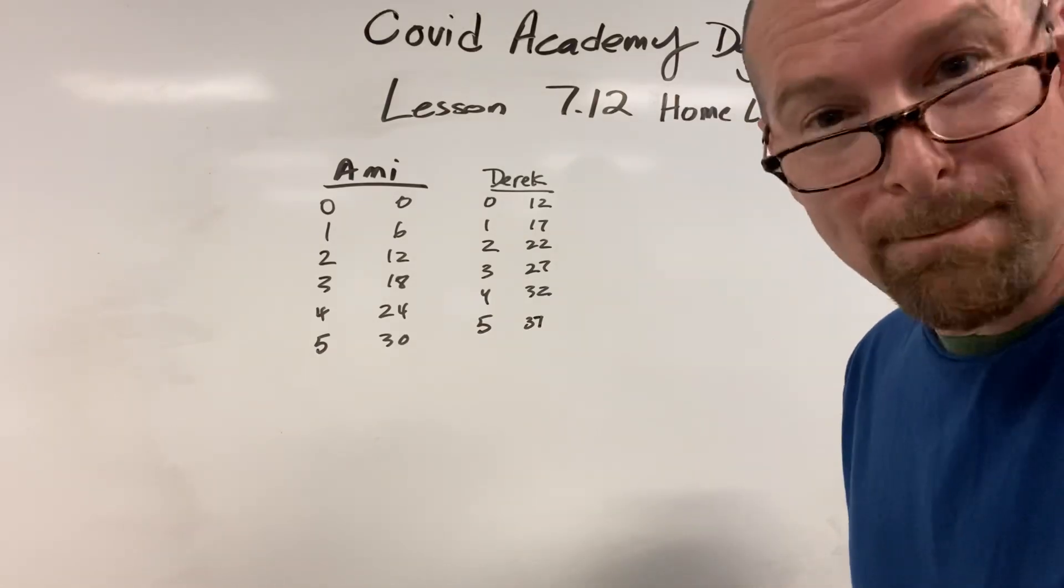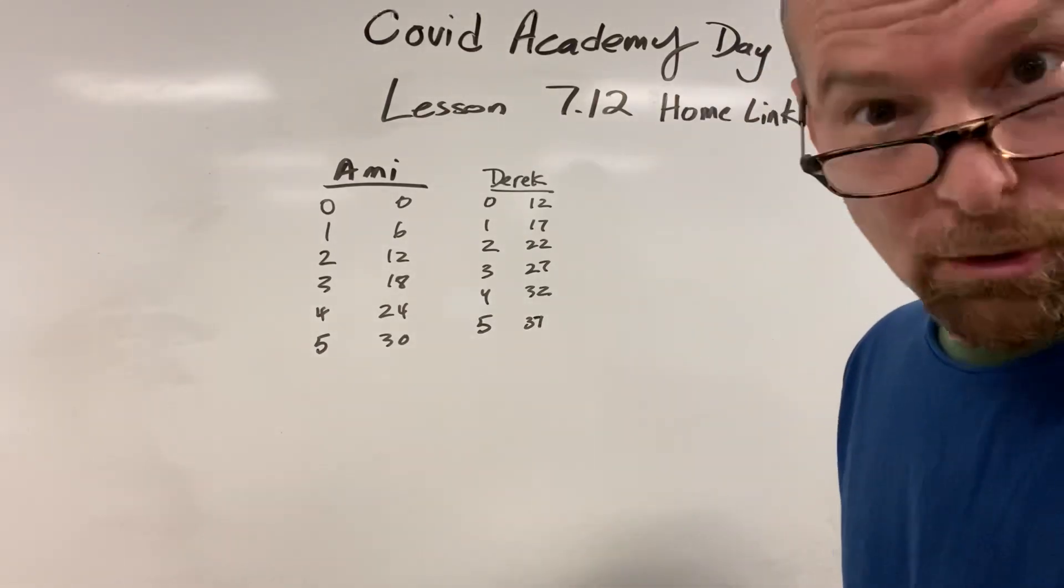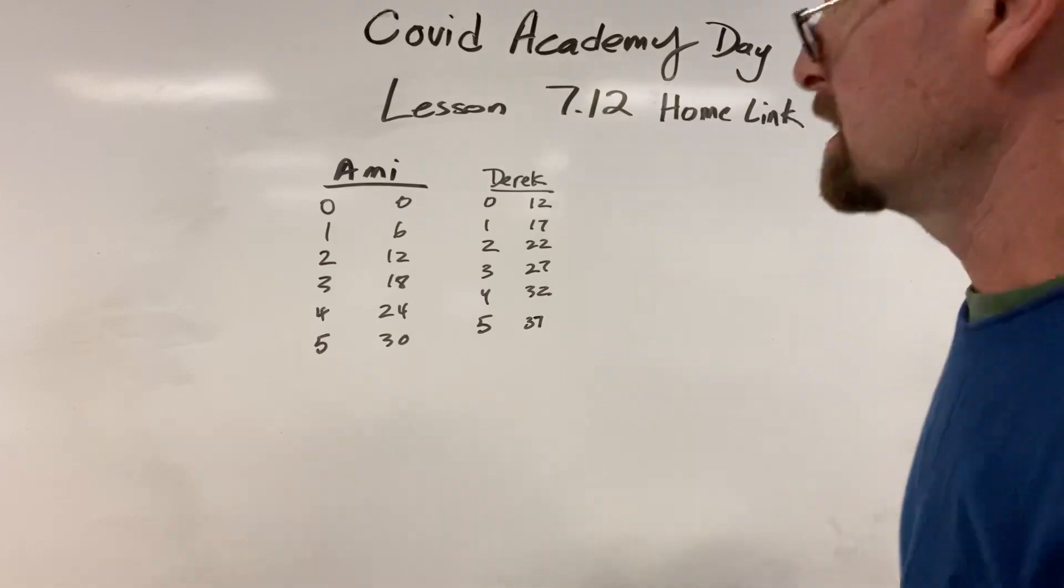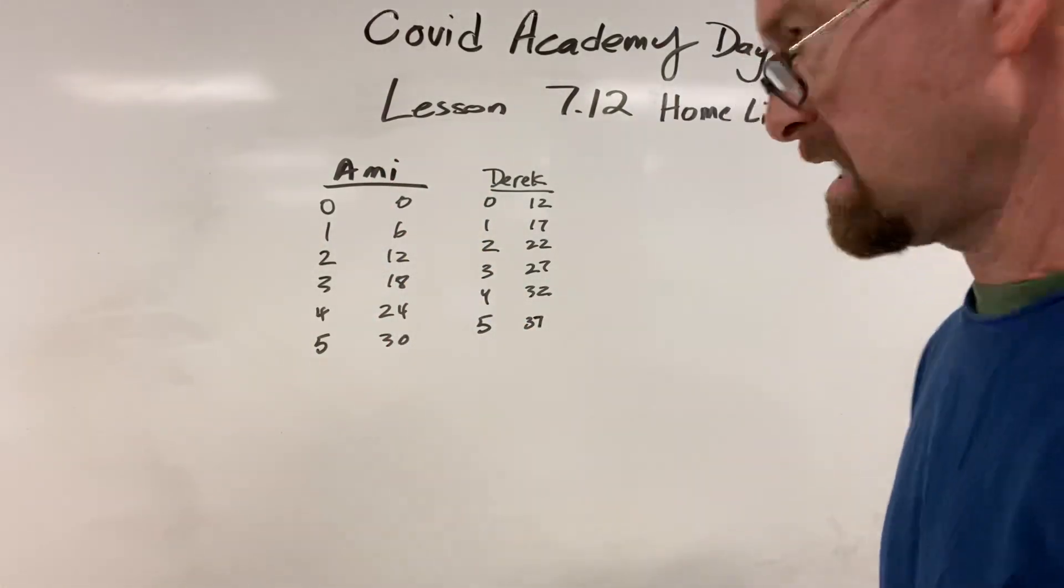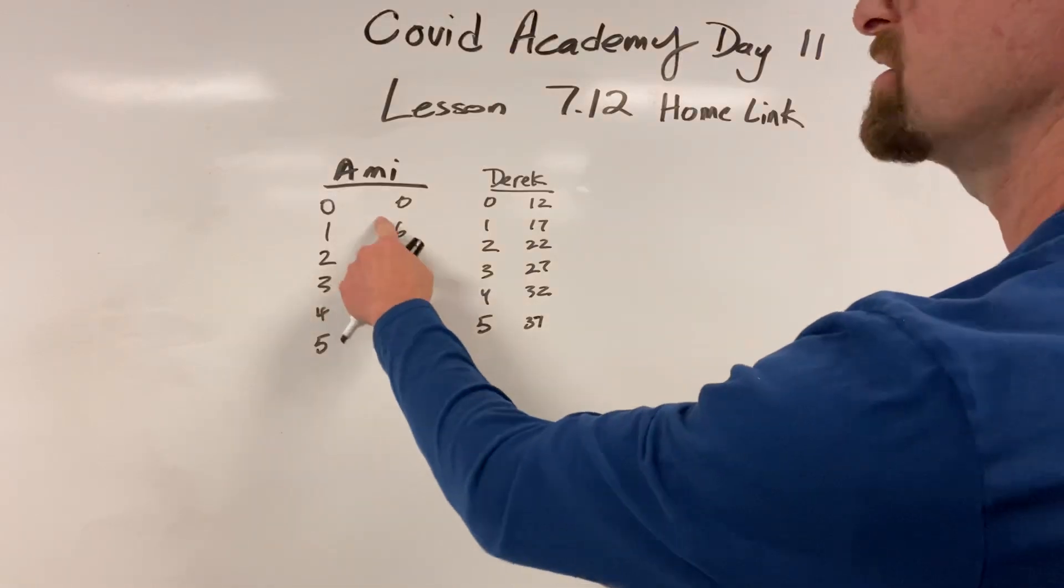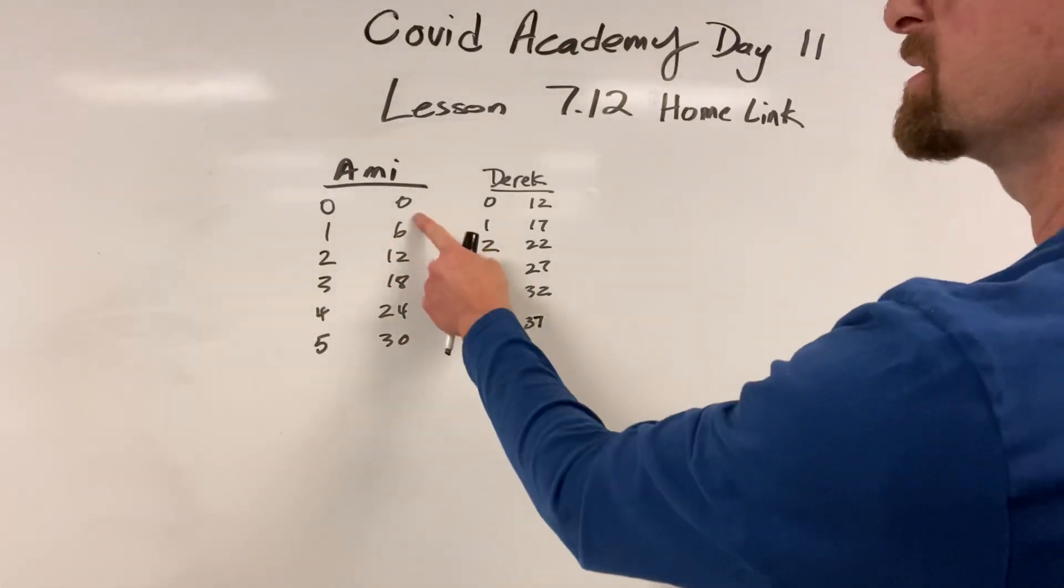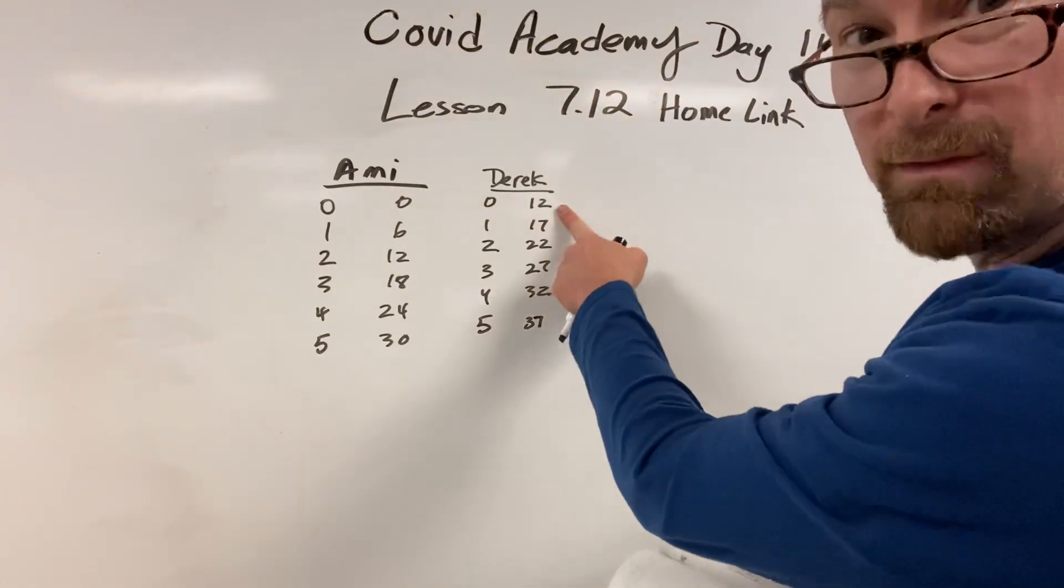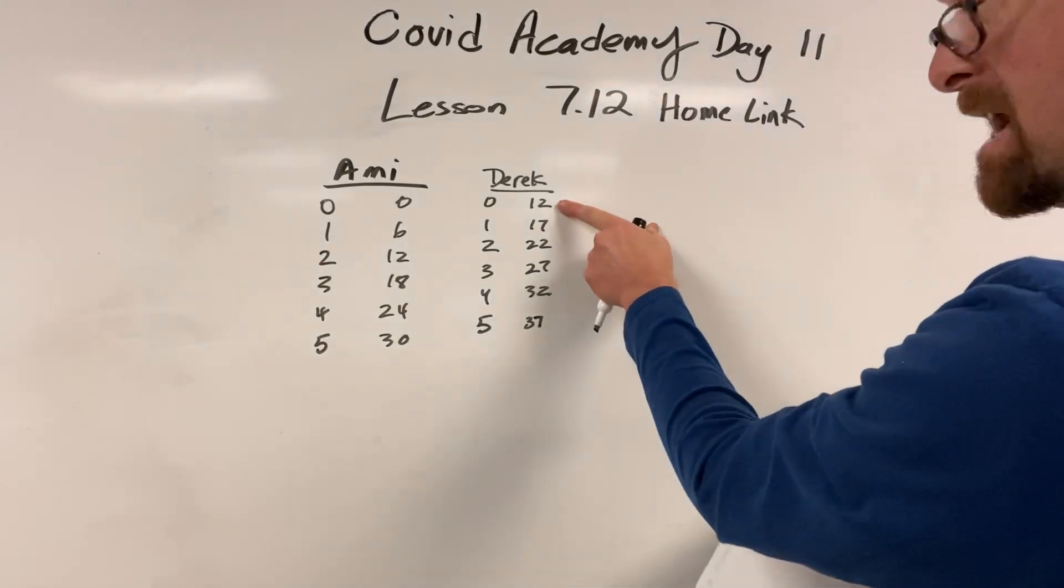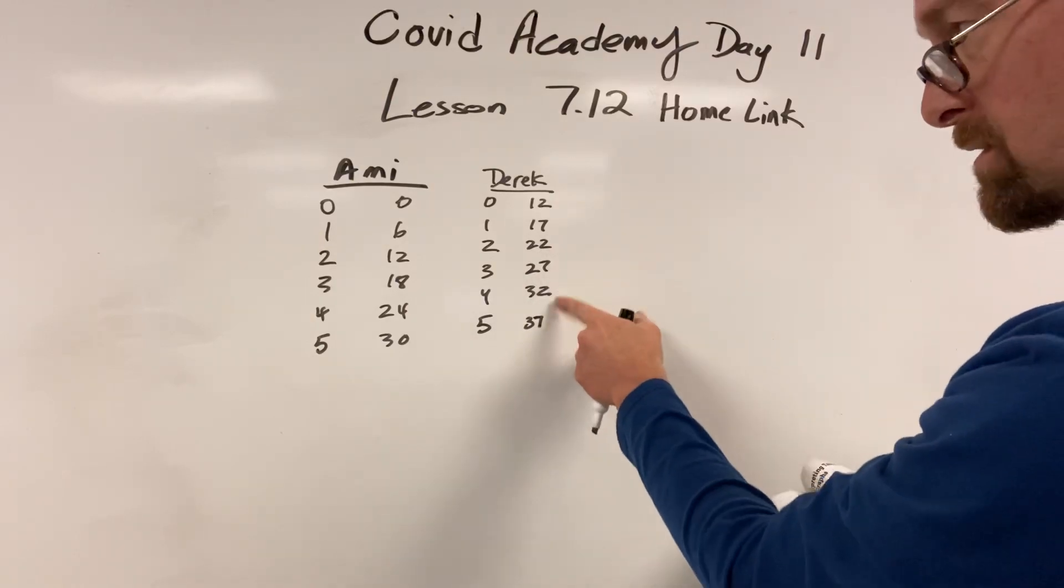This is the story of how Ami is not the brightest bulb in the pack. Because she goes and says, oh Derek, I'm going to race you. You can start at the 12-yard line. And she knows that she's faster. She can go six yards. Well, her numbers go 6, 12, 18, 24, and 30. His, because she let him have 12 yards to start, his go up by 5: 12, 17, 22, 27, 32, 37.